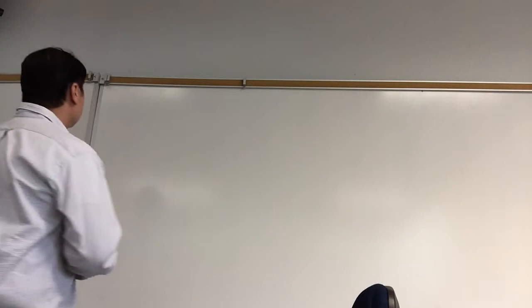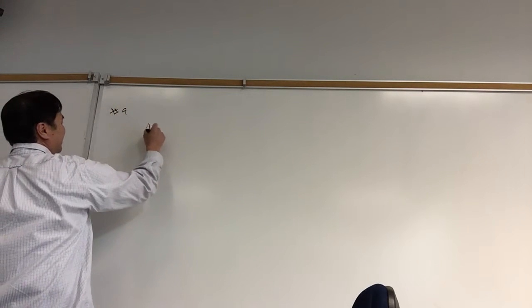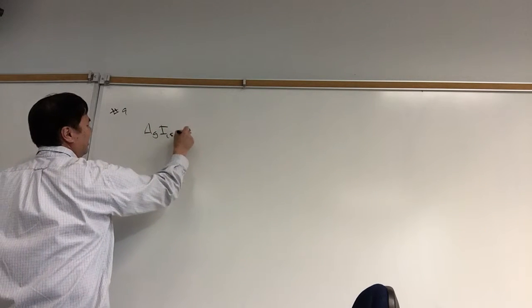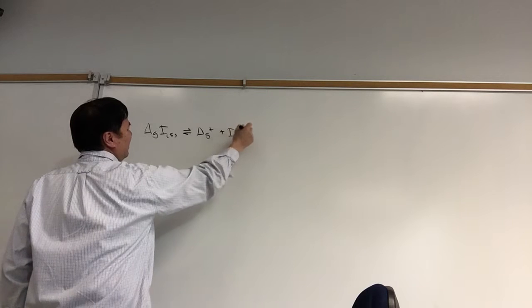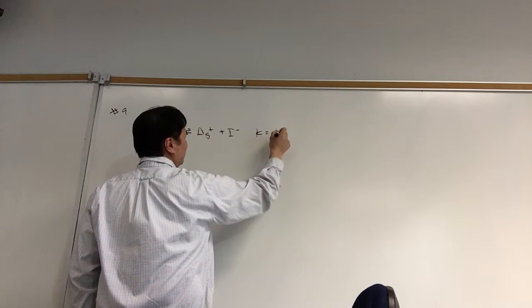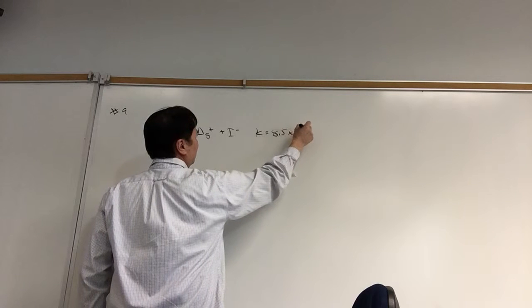For silver iodide solid, AgI, Ag+ plus I- will decay by 8.3 by the order of magnitude. So if you have silver iodide solid, let's do the first one, number 9.